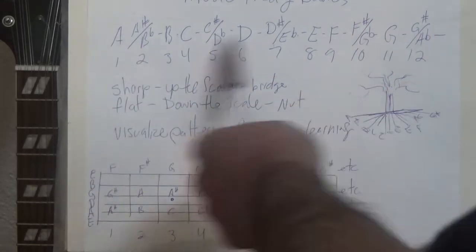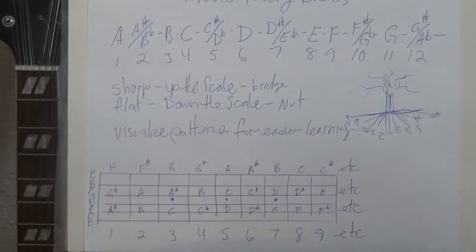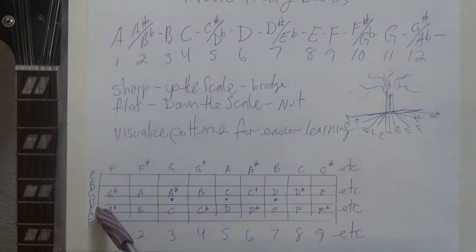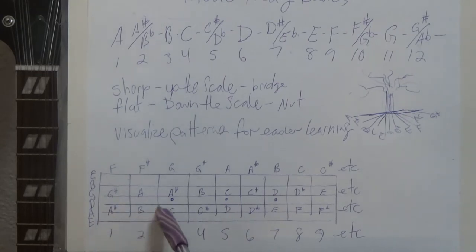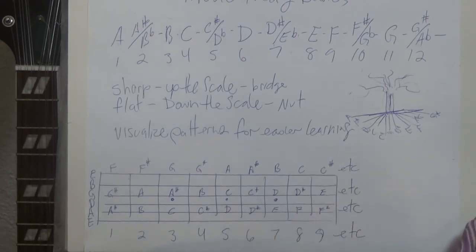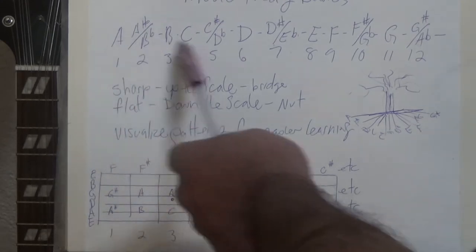Now, if we start with our A string — it's our fifth string — if we play that open, that's going to be an A note. And then the next fret would be an A sharp. Next one's going to be a B, next one a C, C sharp, D, D sharp, E, F, F sharp, and so forth — just like up here in the alphabet.